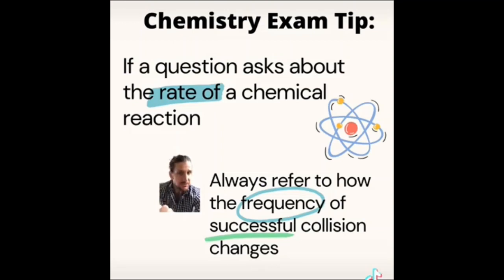Now there's four things that we learn that change the rate of a chemical reaction. Those are concentration, temperature, surface area, and catalysts. All of your responses should mention the frequency of successful collisions.